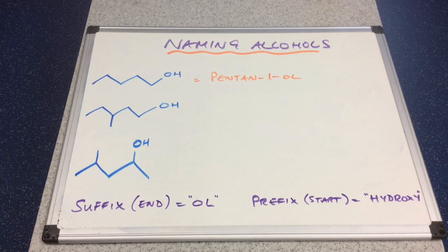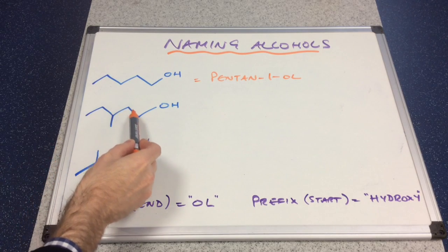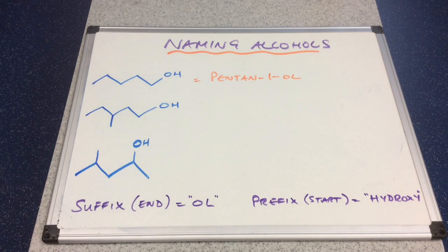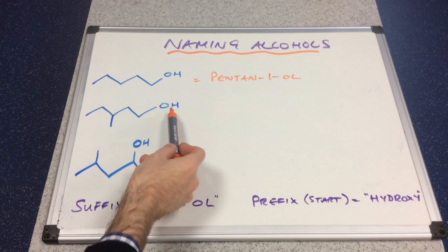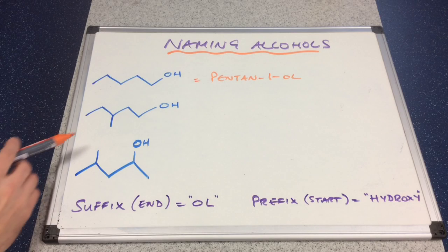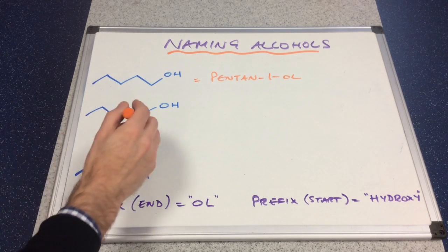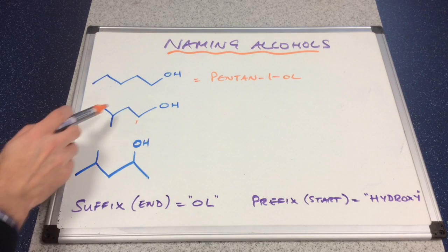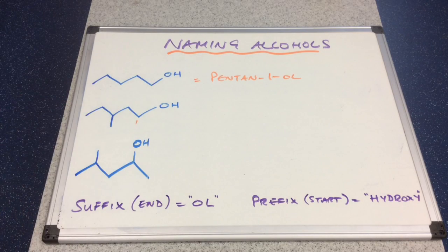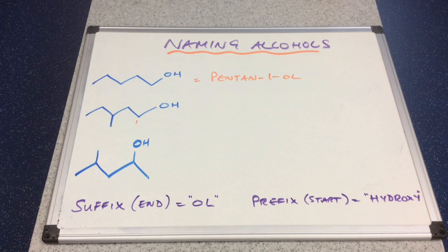The next one: the longest continuous chain is one, two, three, four, five long again, so it's pent-. The OH group is on the first carbon, so it's still a pentan-1-ol, but we've got a branch — an alkyl group — on carbon number three, and that's a methyl branch. So this will be 3-methylpentan-1-ol.